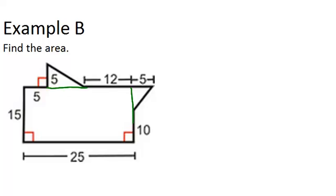So we can figure out the area of each of those parts separately, and then add them up to find the area of the whole shape. So in order to find the area of the rectangle, we need to know base and height.